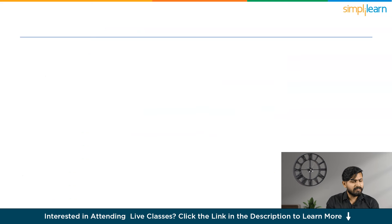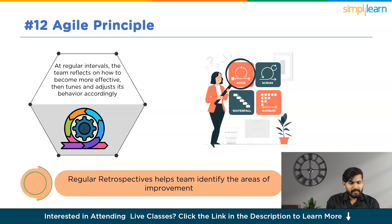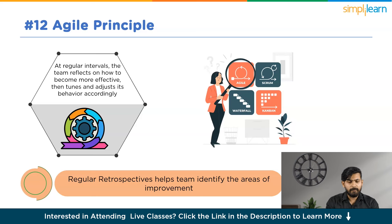Now let us discuss our final, twelfth Agile Principle: at regular intervals, the team reflects on how to become more effective, then tunes and adjusts its behavior accordingly. Living by Agile principles means there is no room for the mindset of 'we can't change because we've always done it this way.' Agile is rooted in continuous improvement with no rigid adherence to predefined processes — teams are always learning new things about customers and markets, and they should also be learning from the processes they use to gain those insights.